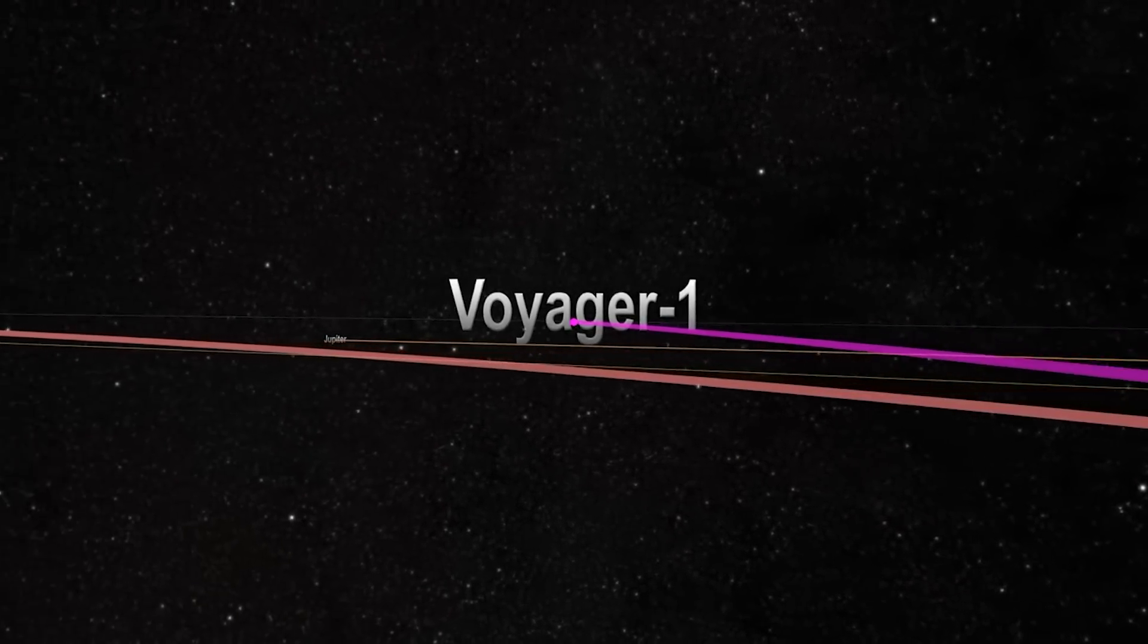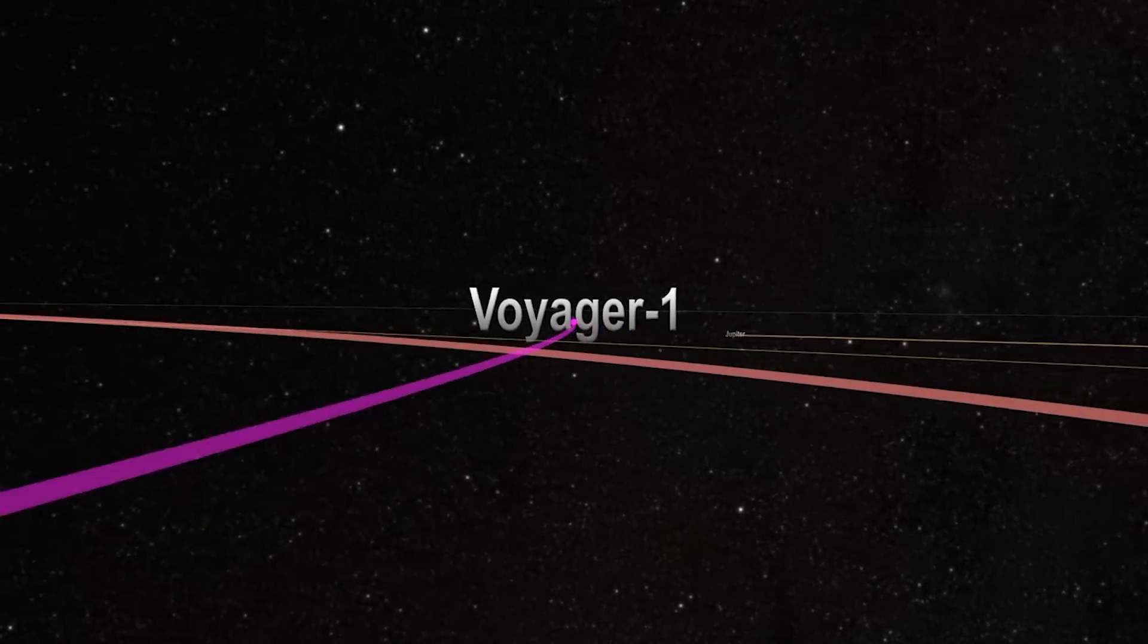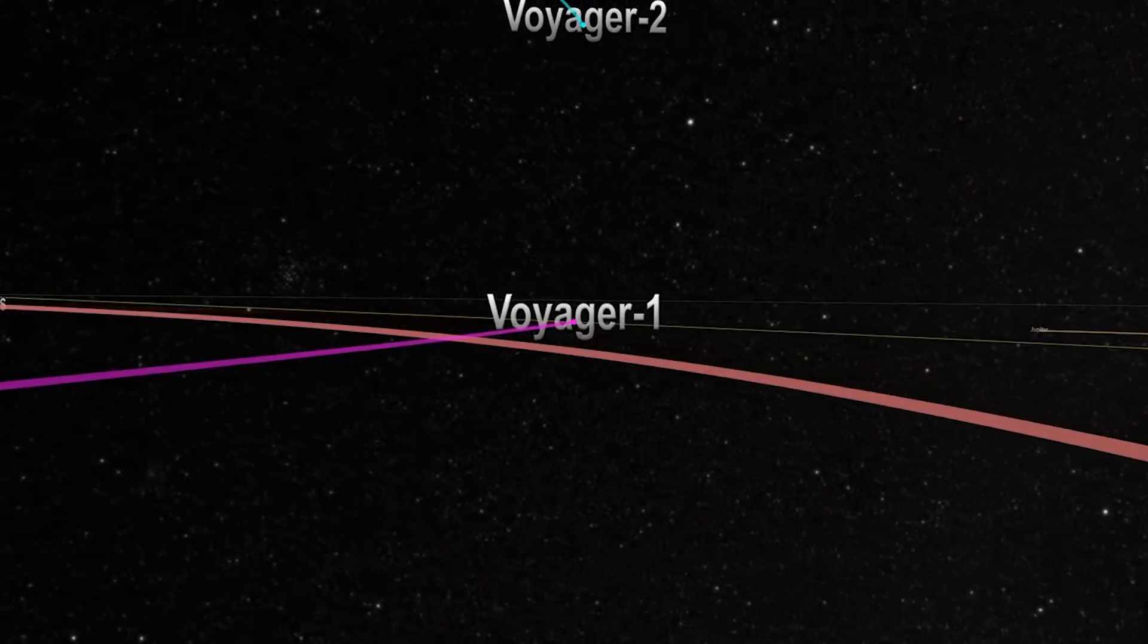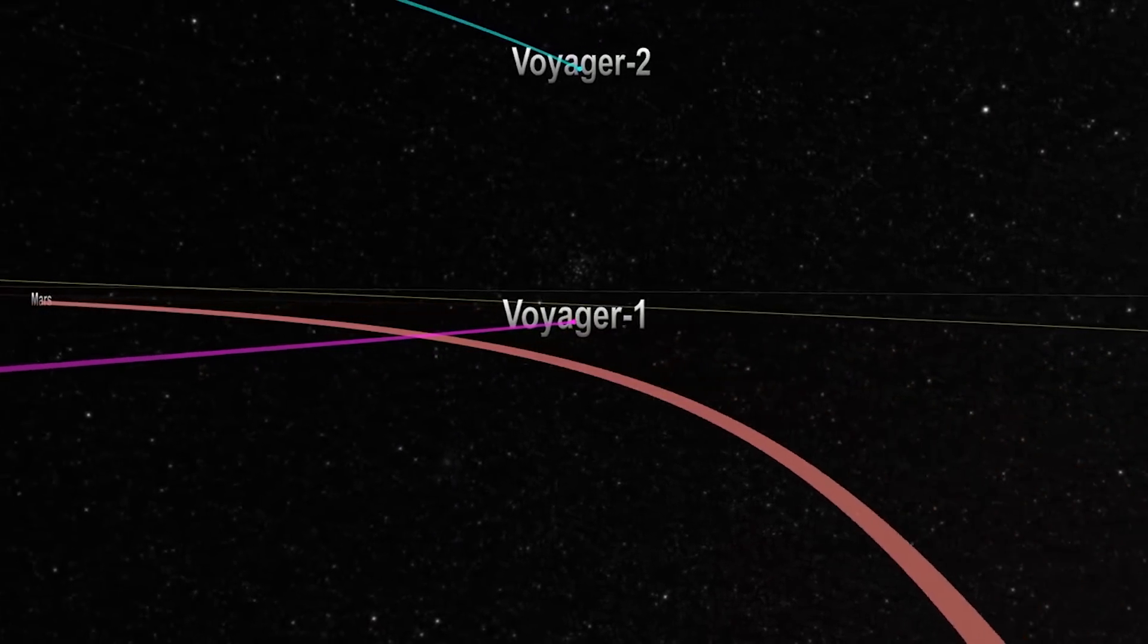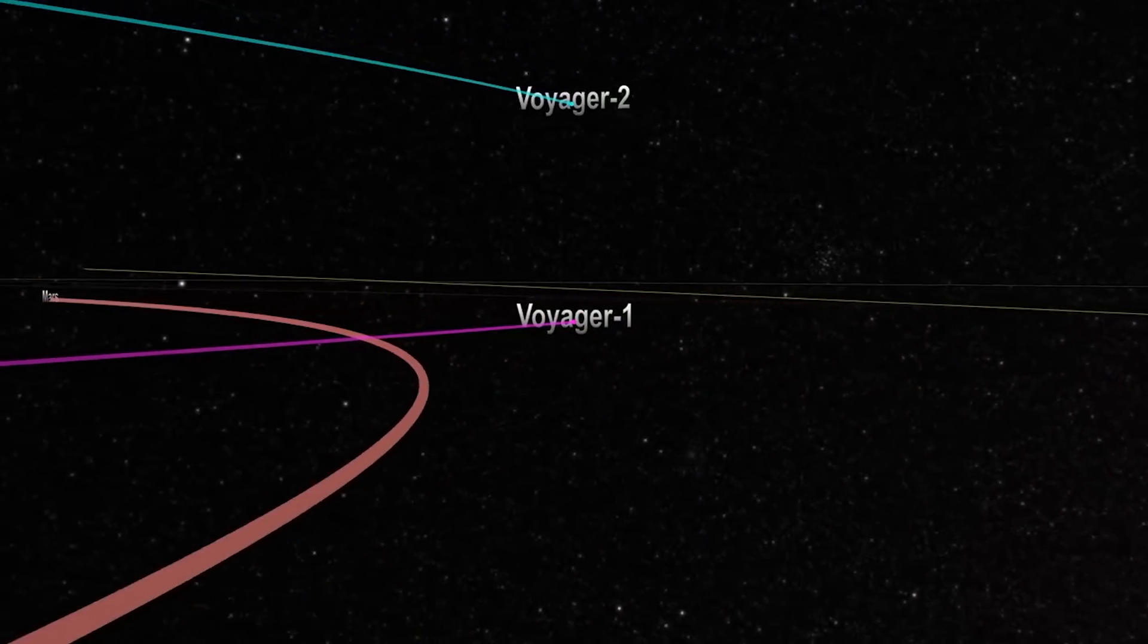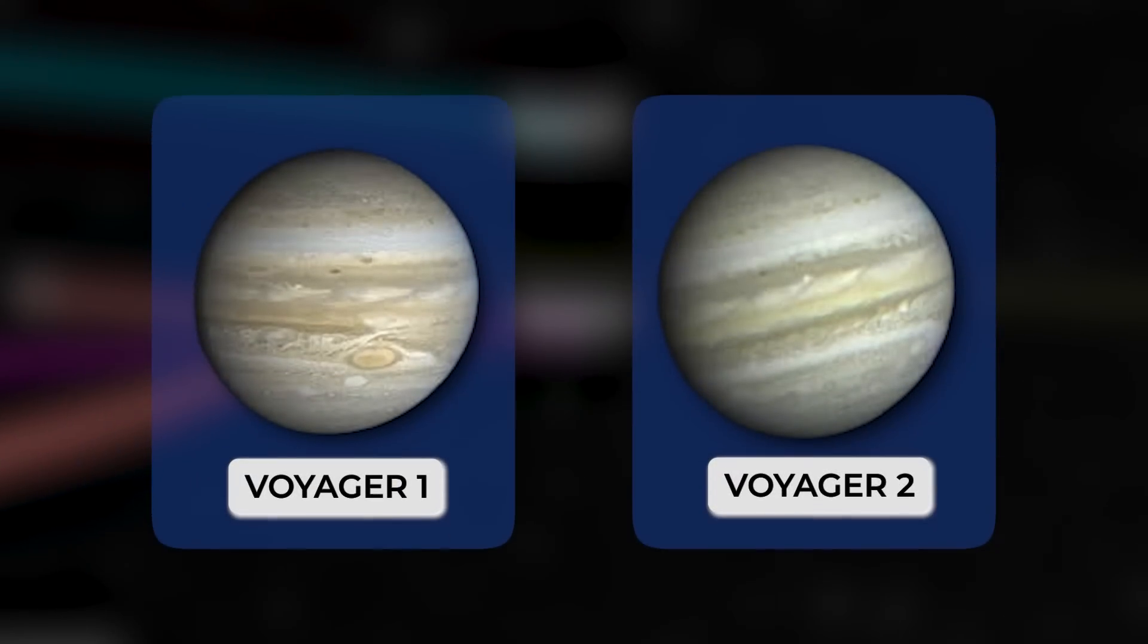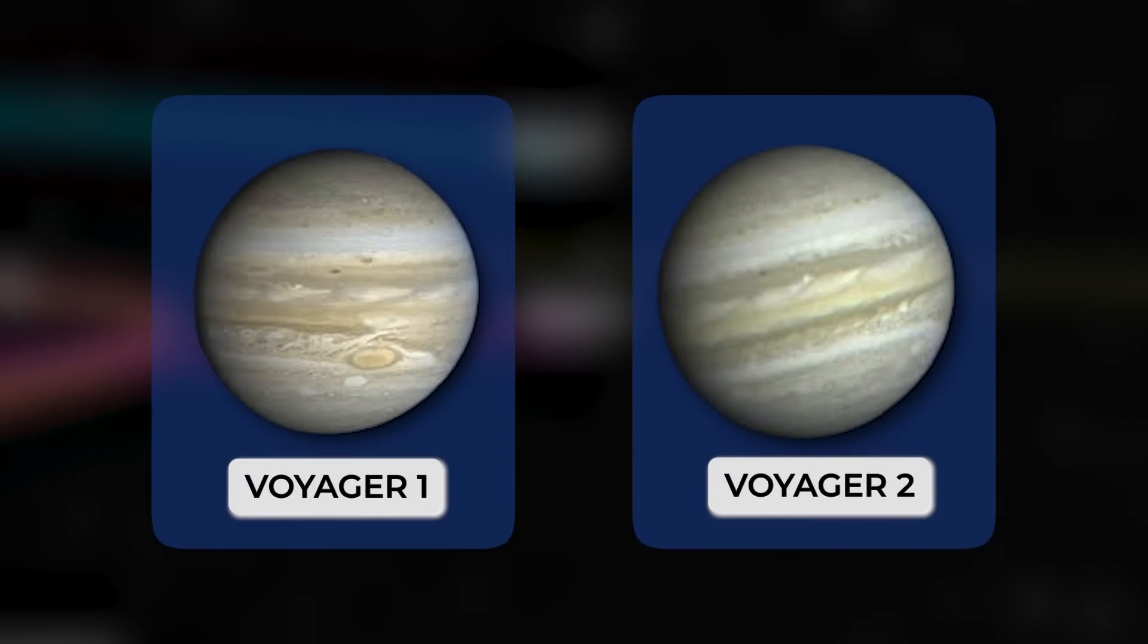But right now, Voyager 1 is just outside the solar system. Voyager 2 is not far behind, reaching the same year using similar onboard equipment.